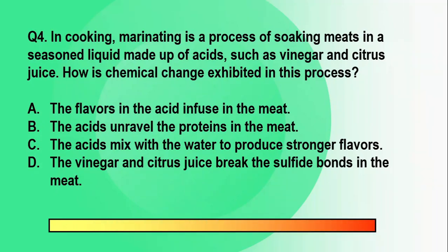The correct answer is letter B. The acids unravel the proteins in the meat. In other words, the acids break down the proteins. Marinating in acids such as vinegar or citrus juices has the effect of tenderizing or softening the meat.